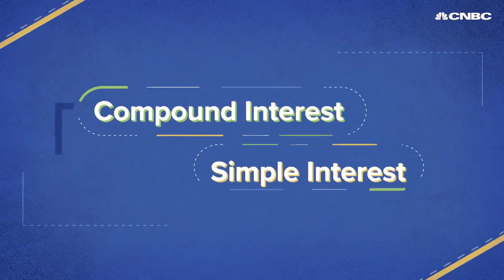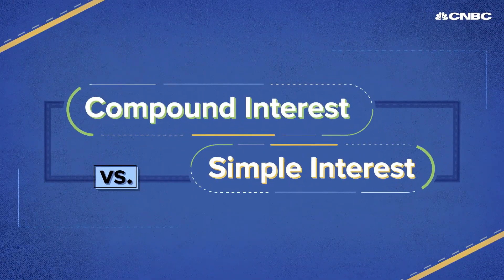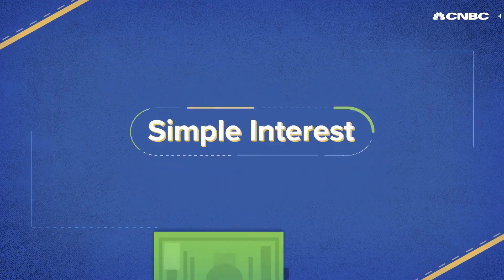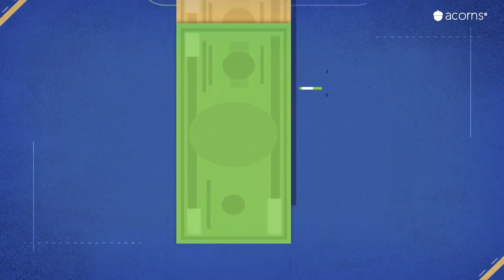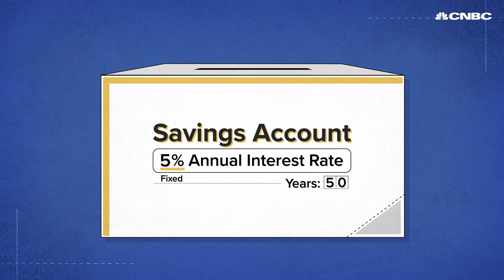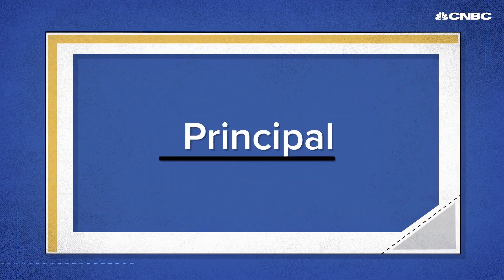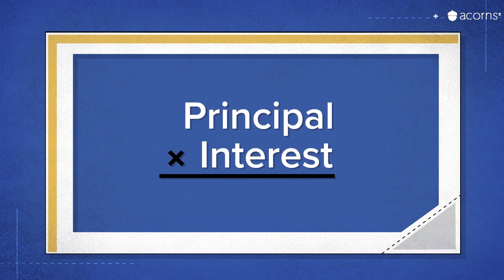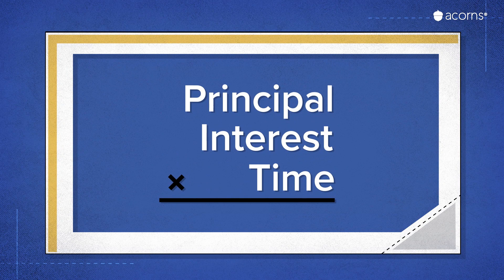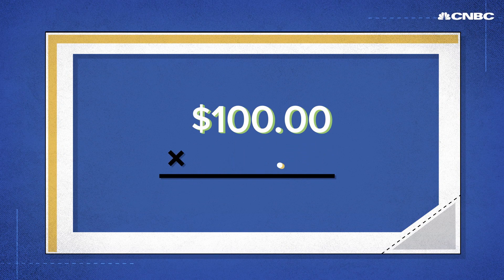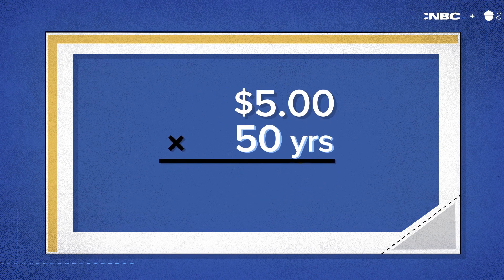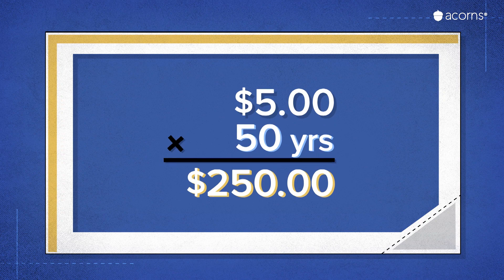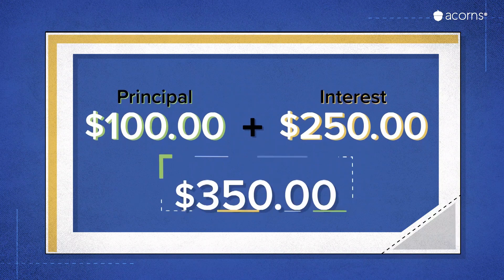First of all, compound interest is different from simple interest. Simple interest is a fixed rate over time based on the initial amount you've invested. If you've deposited $100 into a savings account with a 5% interest rate, all you need to do is multiply your principal by the interest rate and then the amount of time you expect to keep that money in the account. So $100 times 5%, or .05, is $5. Keep that account going for 50 years and you'll earn $250 in interest, for a grand total of $350.